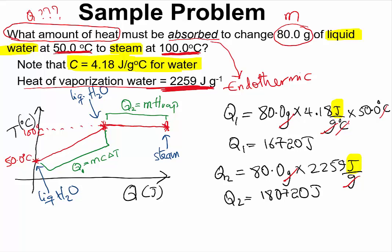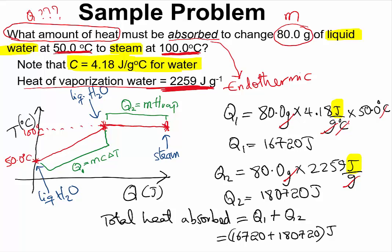So the total amount of heat that must be absorbed by the liquid water. So the total heat absorbed will be equal to Q1 plus Q2, which would be equal to 16,720 plus 180,720 joules. And from my calculator I got 197,440 joules.